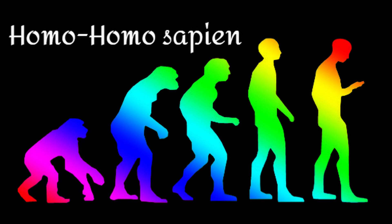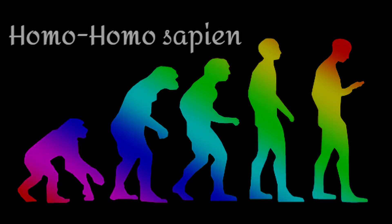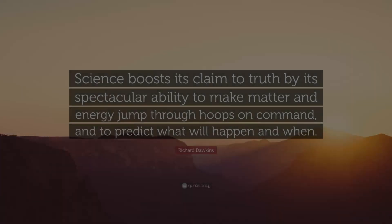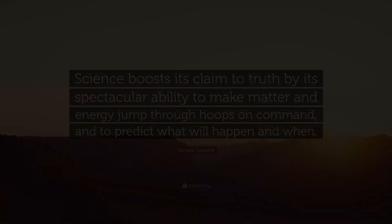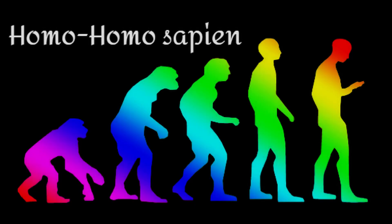This is the most trusted method of gaining knowledge that we have. In the words of Richard Dawkins, 'science boosts its claim to truth by its spectacular ability to make matter and energy jump through hoops on command, and predict what will happen and when.' Any new knowledge gathered through this method is guaranteed to be accurate and based on evidence, and any claims made have been supported by data and evidence and have been through a rigorous process before being accepted by the scientific community.